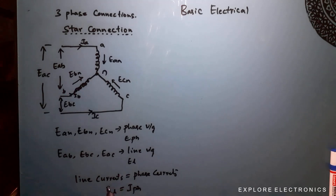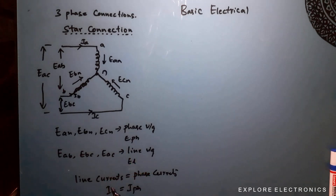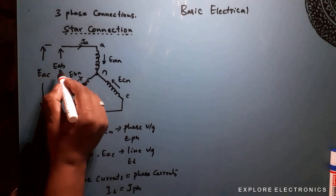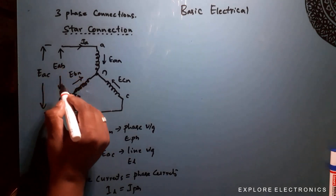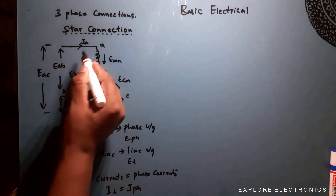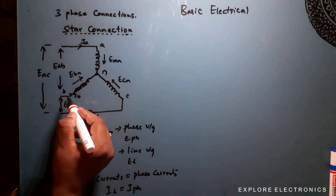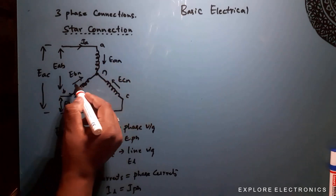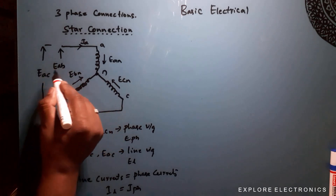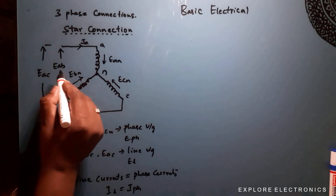In star connection, line currents and phase currents are the same, but voltages are different. So we need to find out what is the line voltage EAB. EAB is the voltage between A and B, which can be found by combining EAN and EBN.